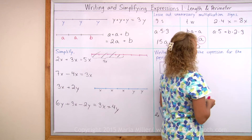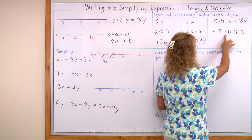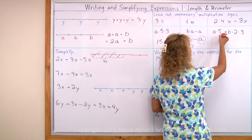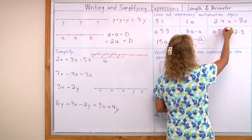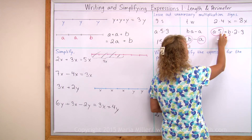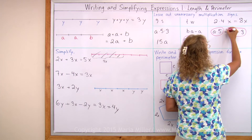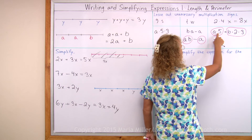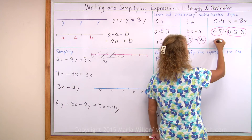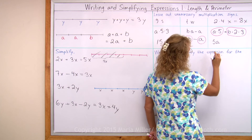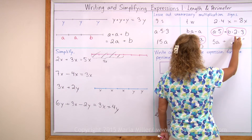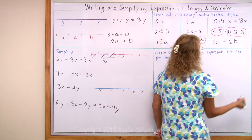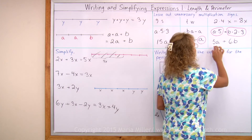Let's do the same here: a times 5 plus b times 2 times 3. We see two terms separated by addition. This first term only has multiplication and numbers and letters, and so does the second. It is customary to write the first as 5a — number before the letter. And over here we multiply 2 times 3 equals 6, and write that in front of b, giving 6b. So the final simplified expression is 5a plus 6b.